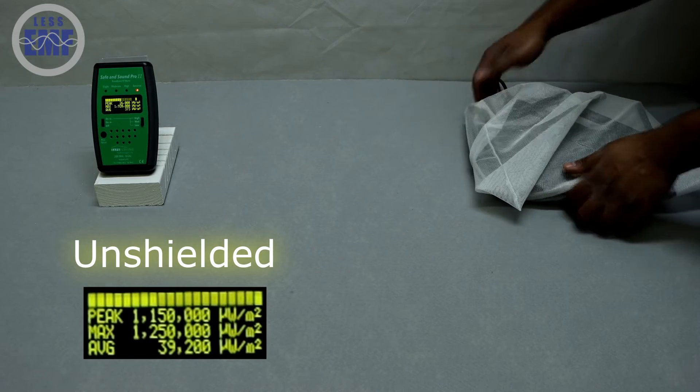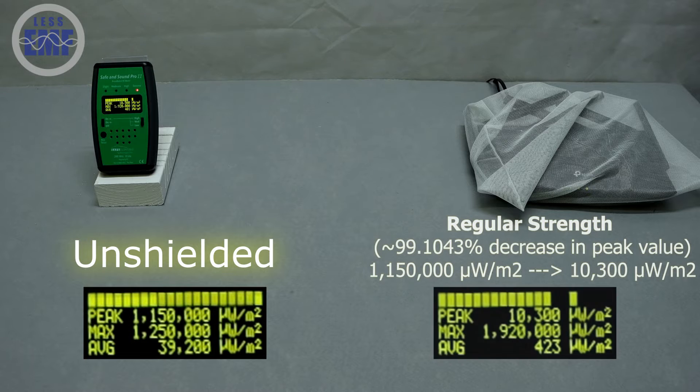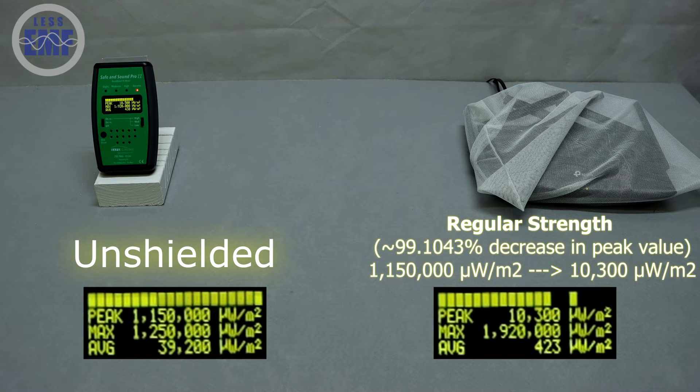Let's see the results after using the regular strength signal tamer. As you can see, there is a significant drop in RF radiation.